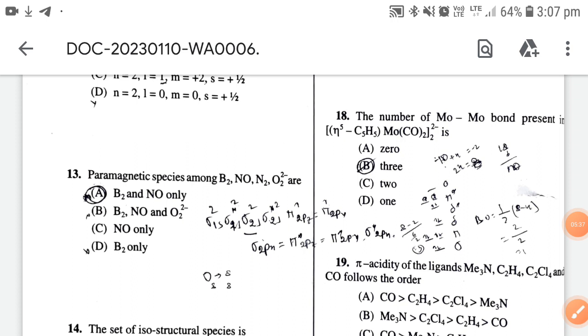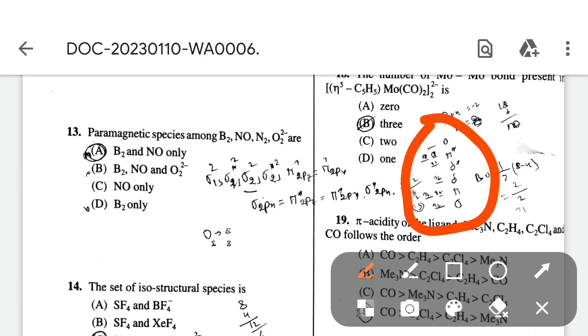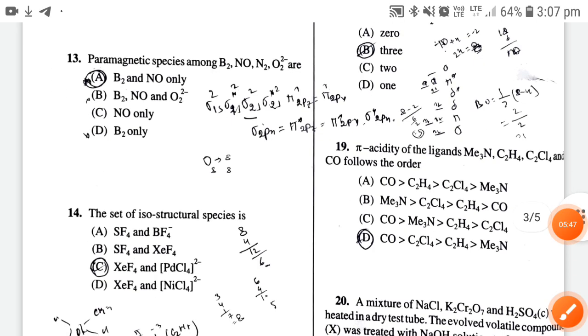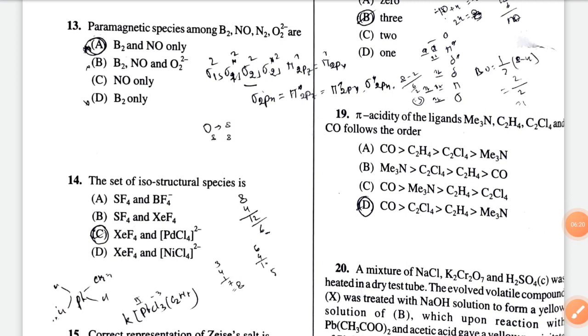Here you can write the answer by this approach: first, calculate the oxidation state of Mo, then these electrons are subtracted from 18 electrons. Fill from bottom to top, then calculate bond order. The correct option is option 3. Next, π acidity of ligands Me₃N, C₂H₄, C₂Cl₄, and CO follows this order - the correct option is option D.